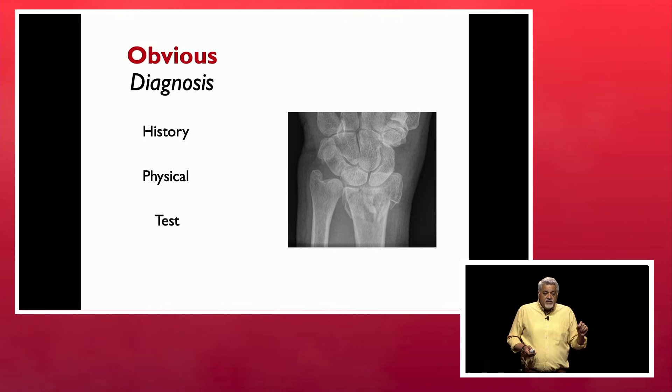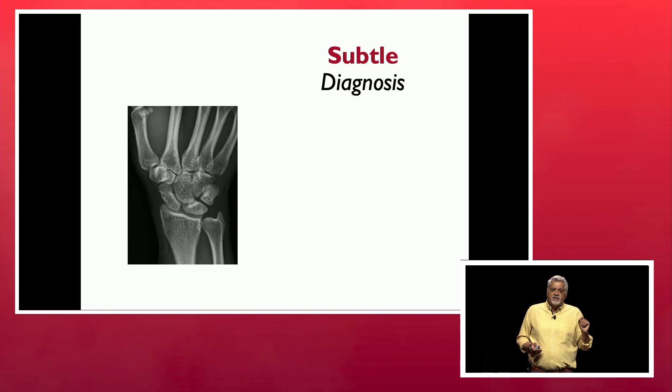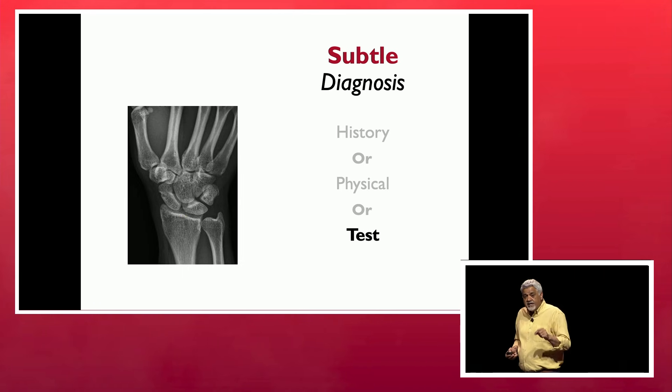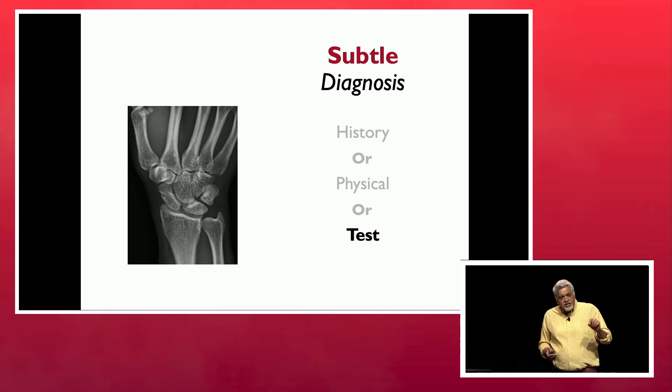So if it's an obvious diagnosis, the history and the physical and the test tell you it's wrong. But if it's a subtle diagnosis, it's the history or the physical or the test that tells you something's wrong. Whether it be chest pain, headache, abdominal pain, or wrist pain. And if you just rely on the test, you are diminishing your chances of picking up that needle in a haystack.